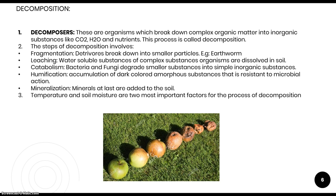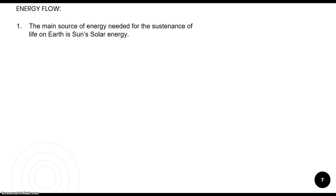The most important factors in decomposition are temperature and soil moisture. These two factors control the entire process of decomposition. As you can see in the diagram, this shows the decomposition of a fruit taking place in the ecosystem following the steps we have just discussed — all controlled by temperature and soil moisture.